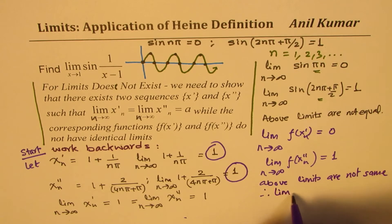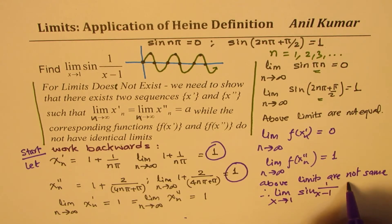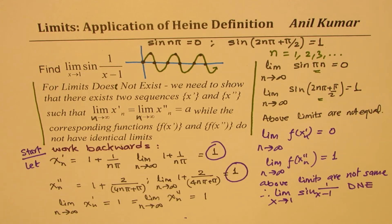Therefore, limit as x approaches 1 for sine of 1 over x minus 1 does not exist. Is that clear to you? So that is how we are going to solve such questions. I hope it makes sense.